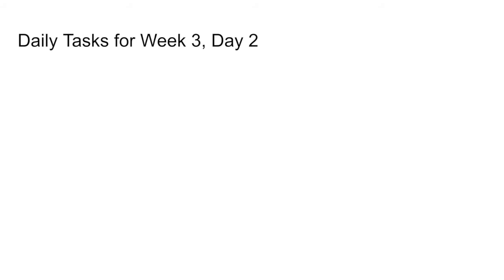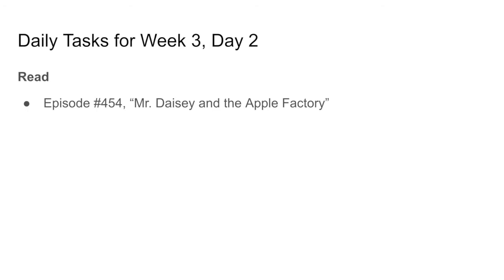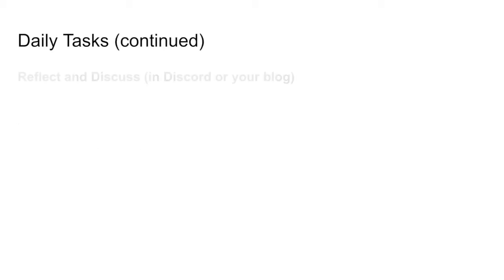Here are the daily tasks for week three, day two. First, read episode 454 of This American Life, 'Mr. Daisey and the Apple Factory' — I'll link to it in today's notes. Also listen to episode 460, 'Retraction.' Then reflect on those episodes and discuss them in Discord or on your blog. Discord is great for short, snappy messages and quick conversations; your blog is better for longer thoughts where you want to provide examples and links. If you have more than a paragraph to say, that's probably a blog post.